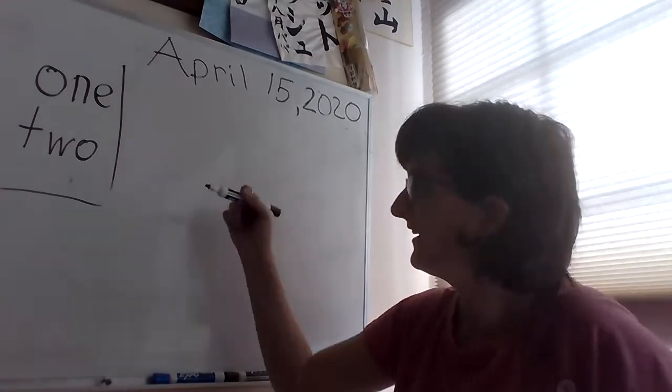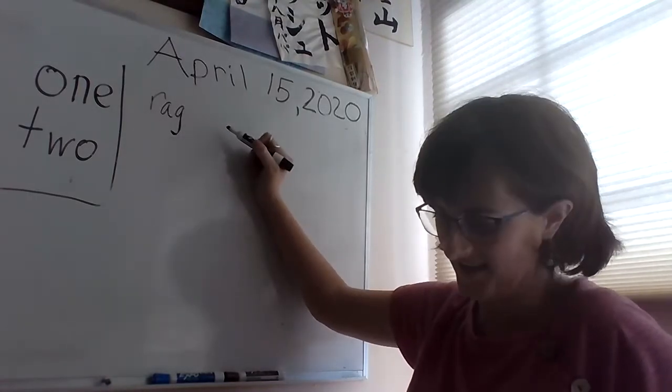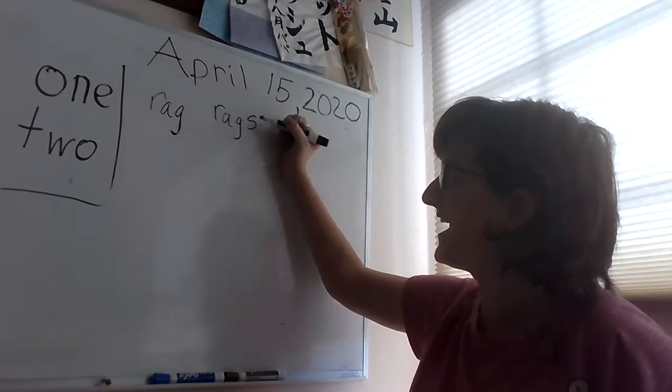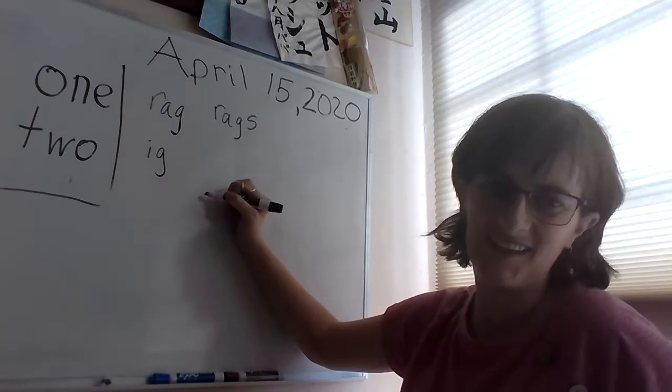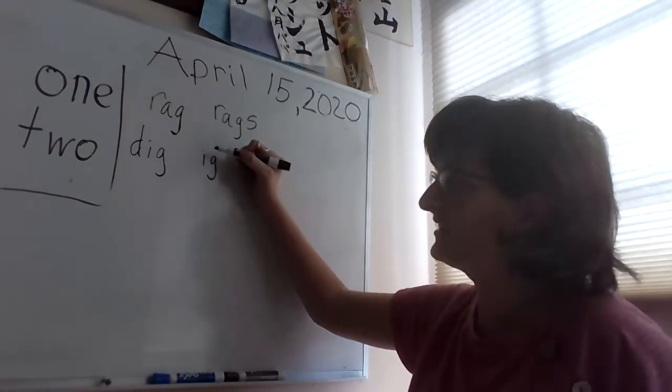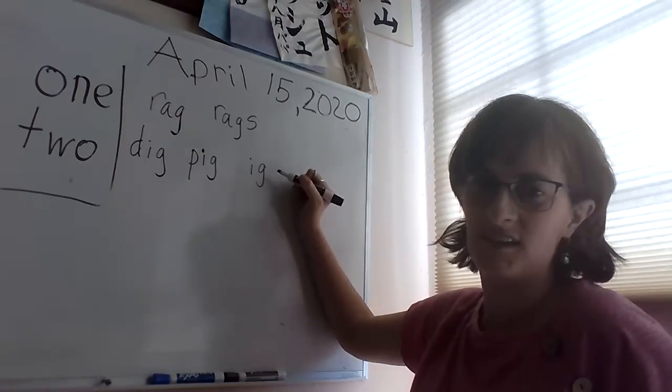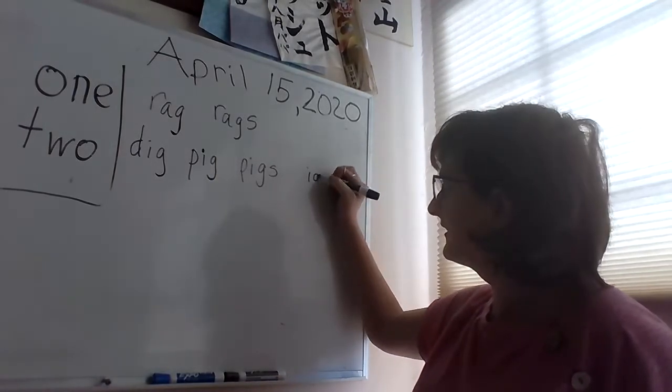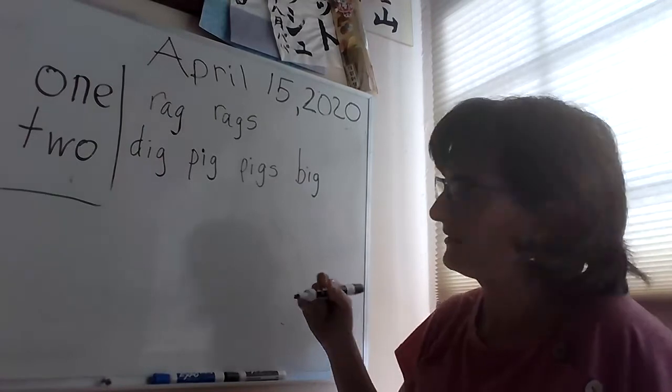All right, here we go: ag, ag, ag, rag. Next one, ag, ag, ag, rags. Next one: egg, egg, egg, dig, dig, pig, pig. Good.